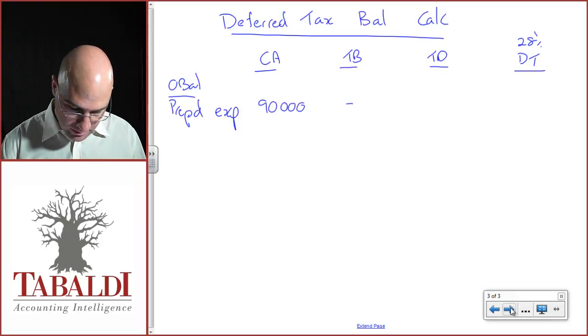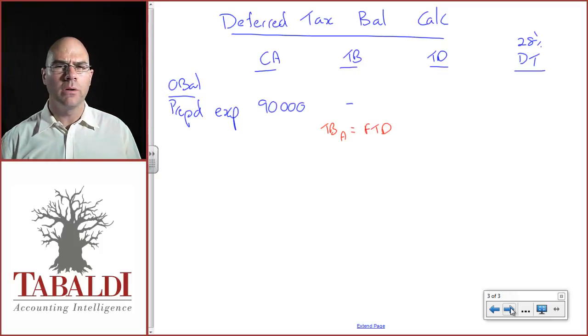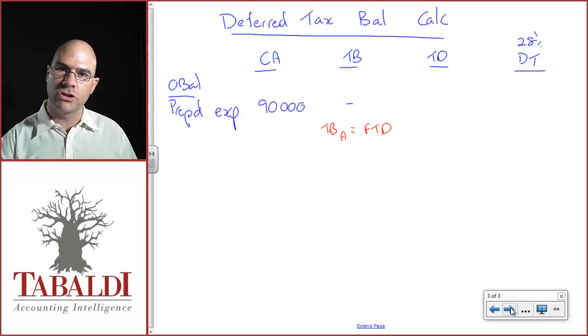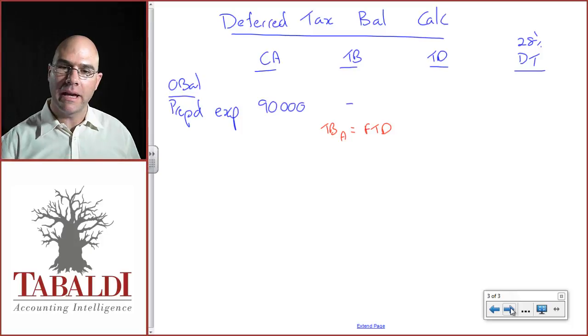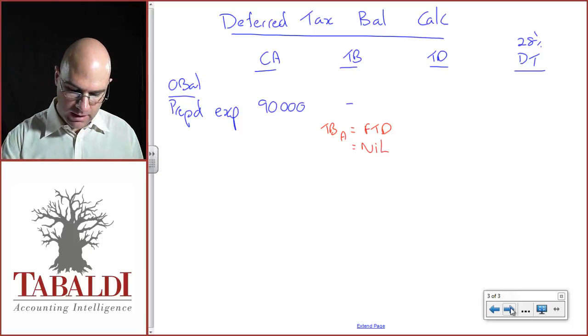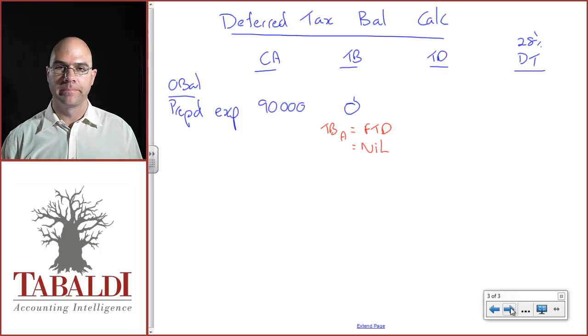Are there any future tax deductions? Remember, the tax base of an asset equals future tax deductions. There are no future tax deductions on this. The tax authority has already given you the tax deduction in the prior year when you made the payment. So that equals nil. Therefore, the tax base is nil.